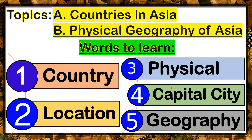So these five words are very important for the better understanding of our topic for today. Let's read them again from numbers one to five: country, location, physical, capital city, and geography.